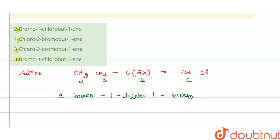Or we can write this as 2-bromo-1-chloro-but-1-ene. And this is our answer, so from this we can say that option A is correct. Thank you.